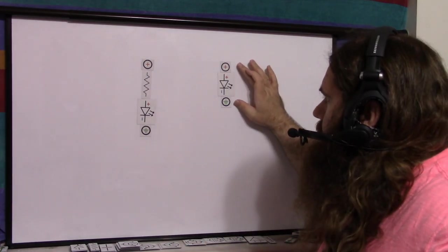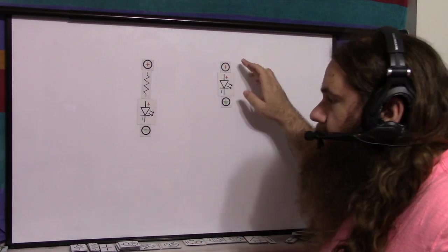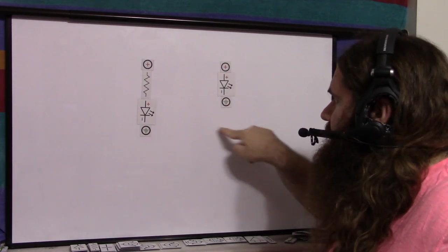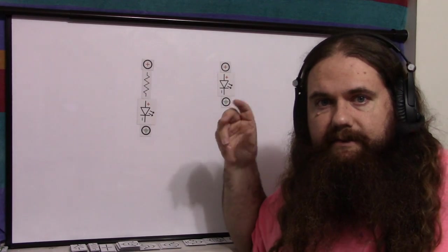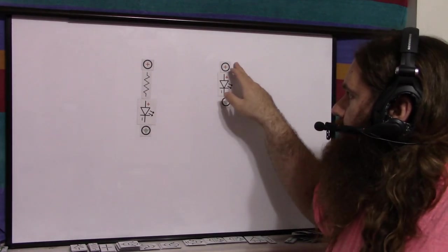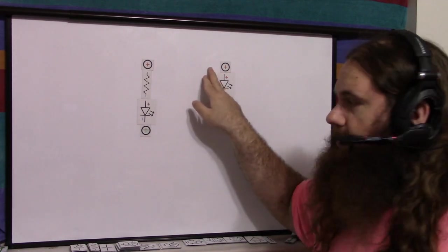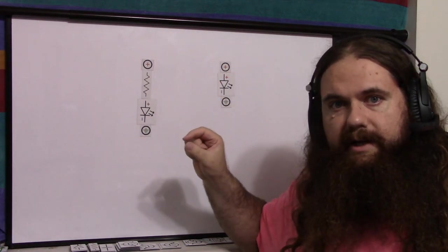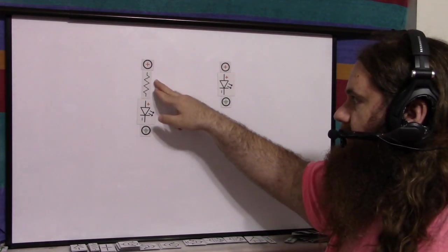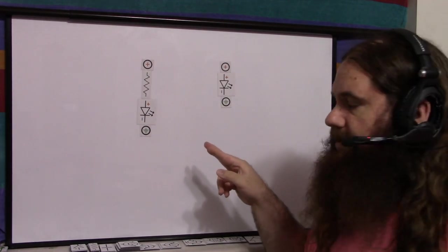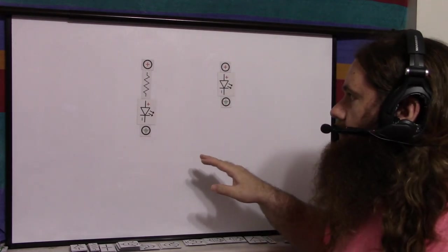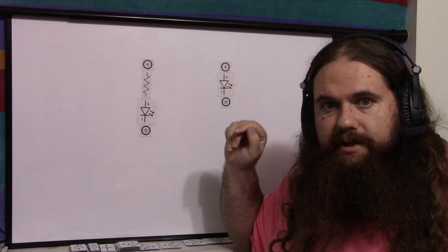This idealized model has no resistor. If you do your Kirchhoff's voltage law analysis, you will find that it violates it. Because in reality, there is a resistor, it's called the wire. It has milliohms or less, but that's the resistor. So what you have is an extremely low-value resistor which is not going to limit the current at all, and you're going to blow out your LED.